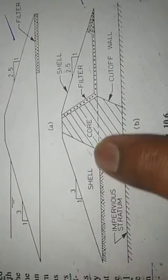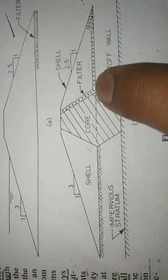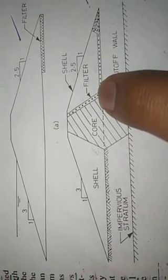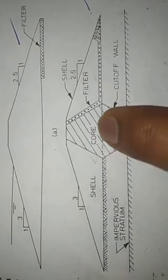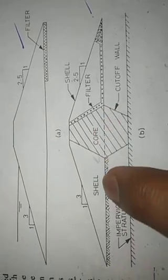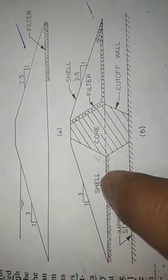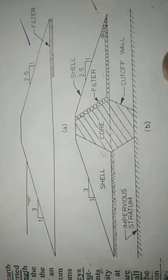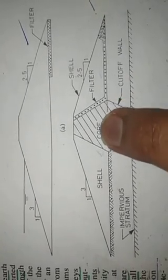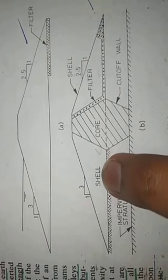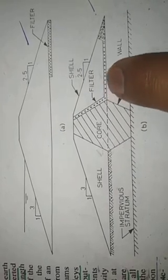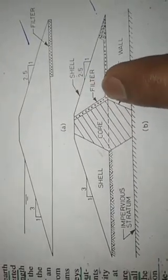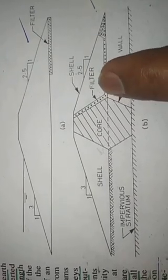To separate the core zone from shell zone, also known as shoulder or earth, or we can say here to separate out the impervious zone from the pervious zone, a layer is constructed between them. It is known as filter.